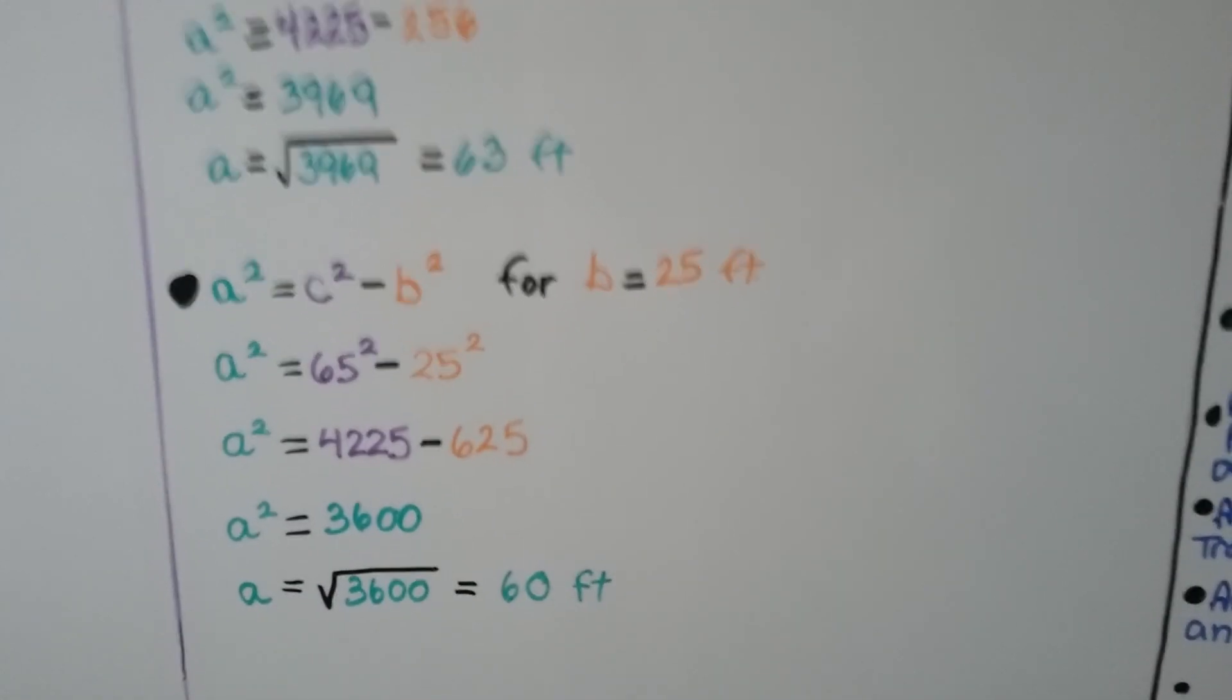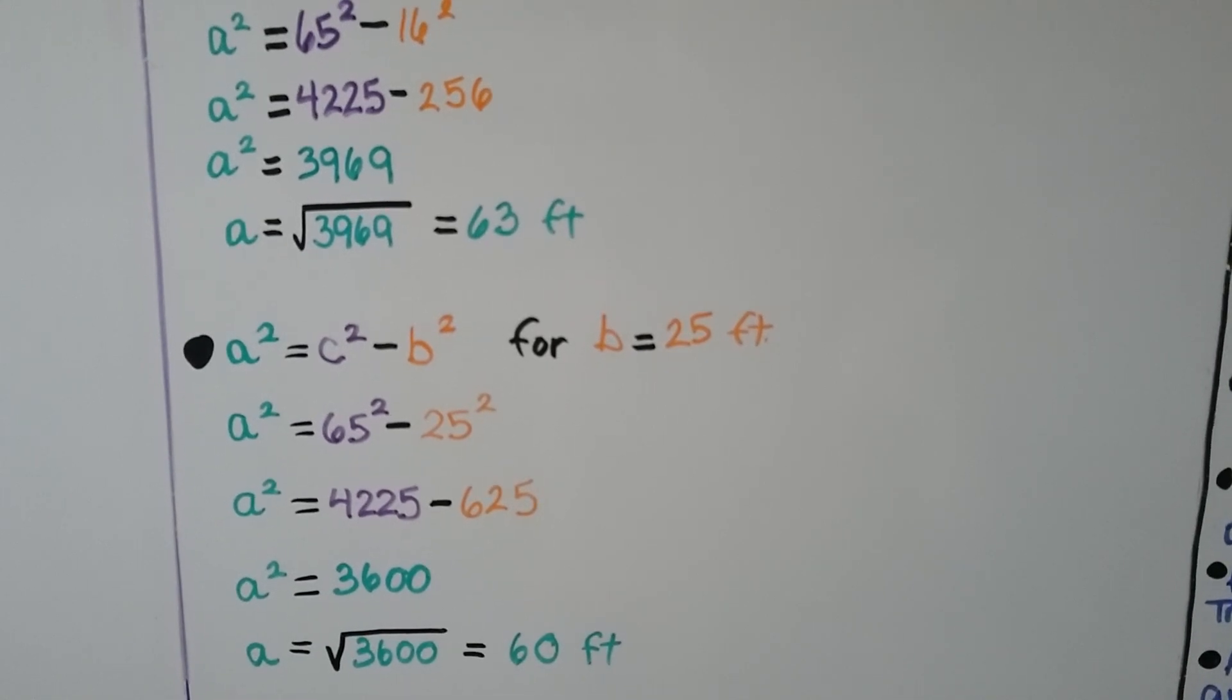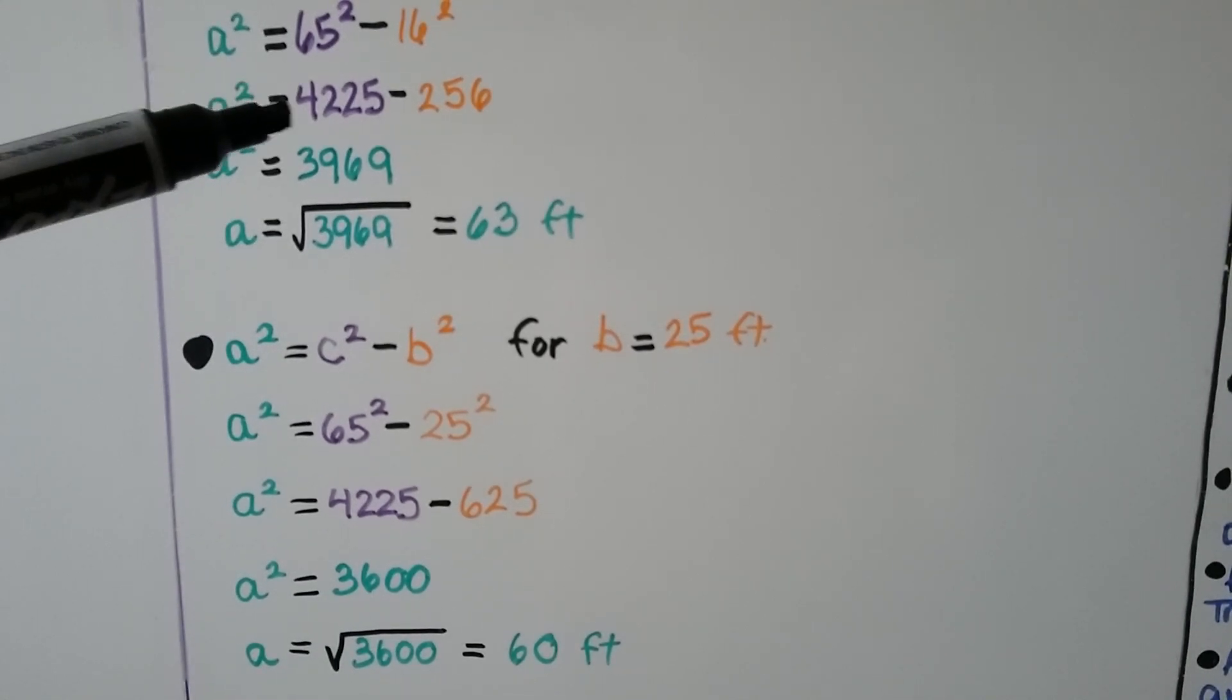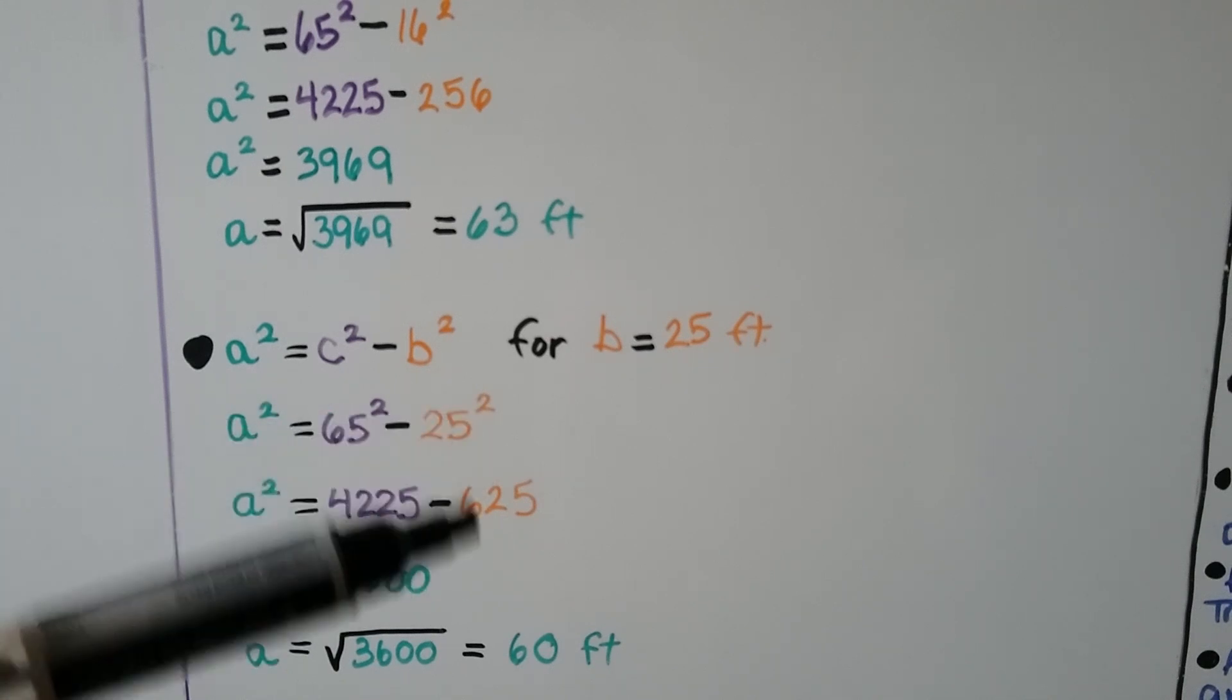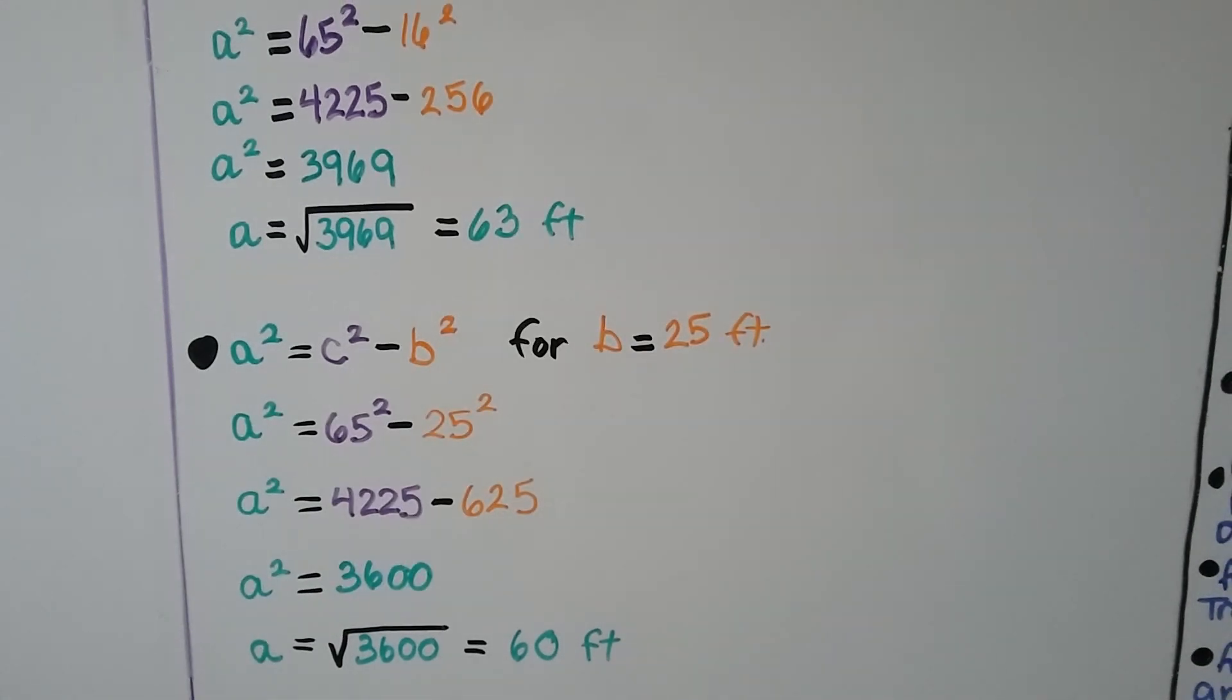So you can see we're using the same value for c squared, the 4,225 for the 65 squared. We're just substituting in the other values for leg b.